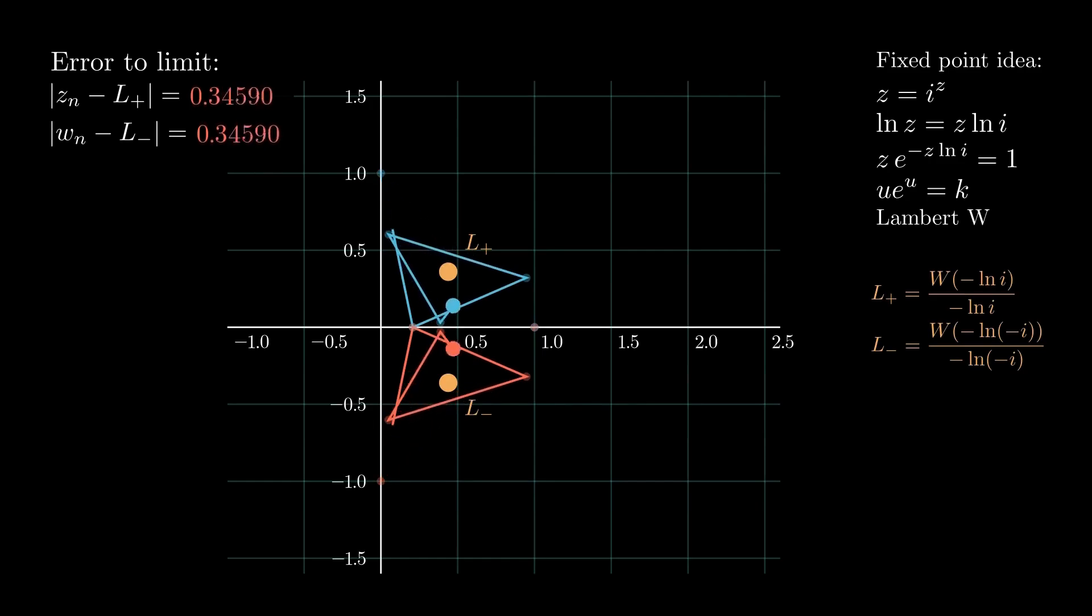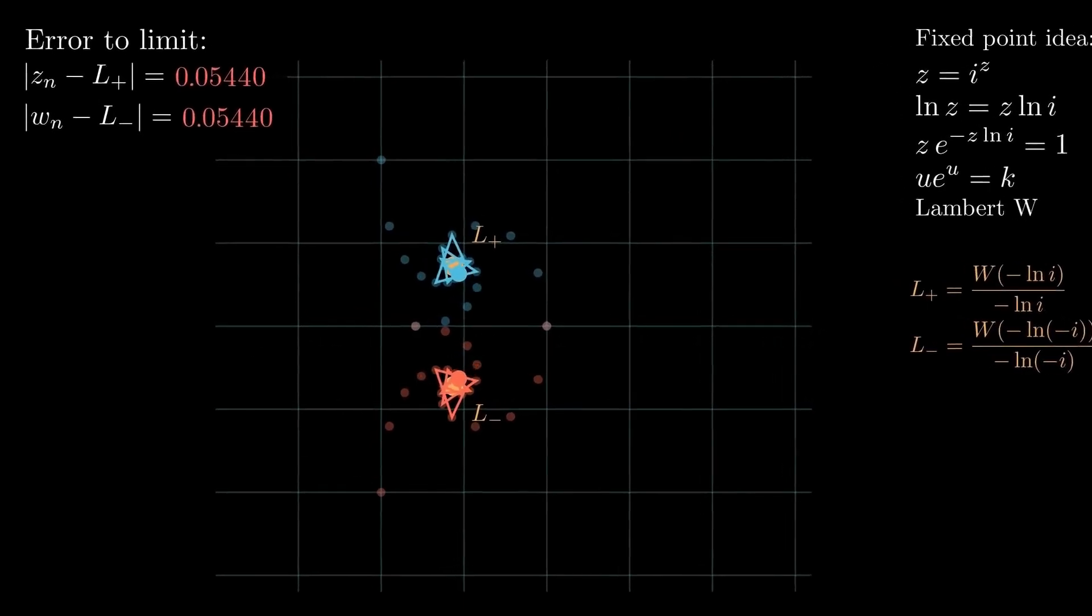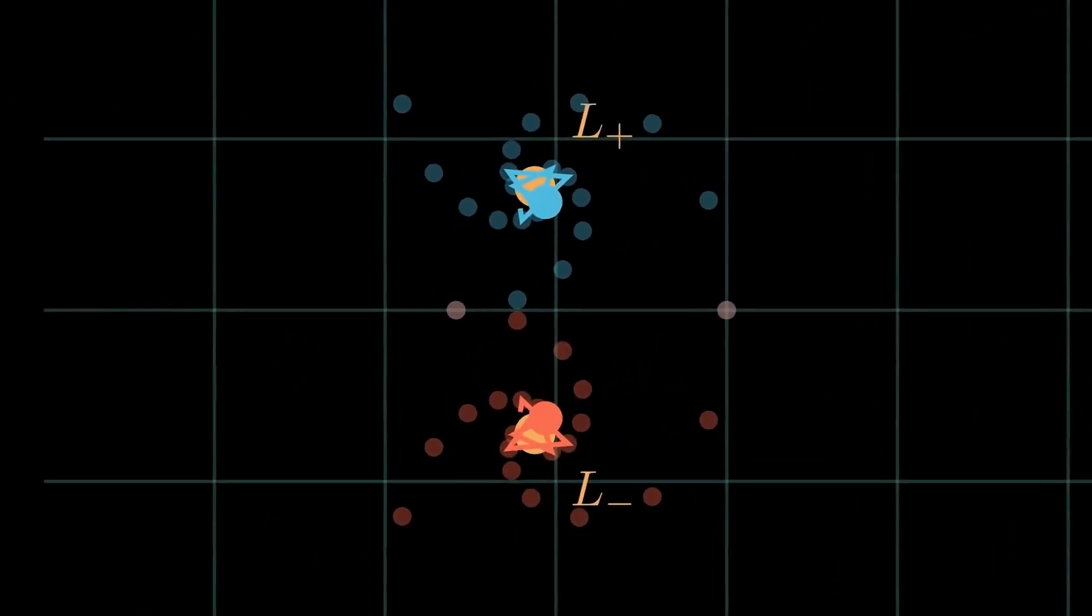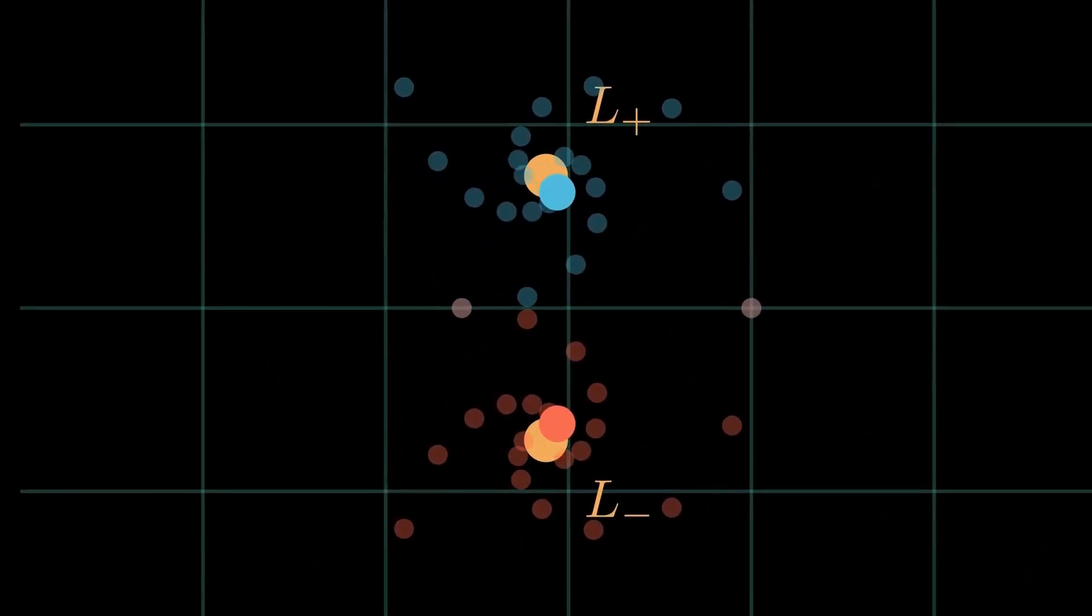Both sequences approach their predicted limits. They share the same real part, but their imaginary parts have opposite signs. This confirms the analysis. The infinite power towers converge to complex conjugates. Thanks for watching.